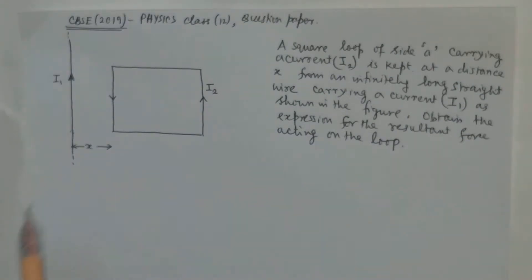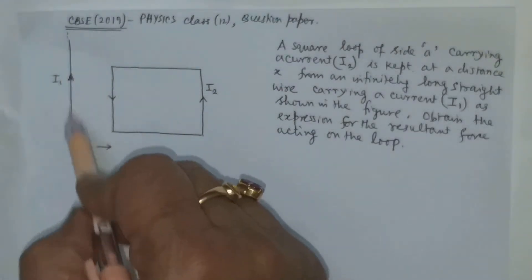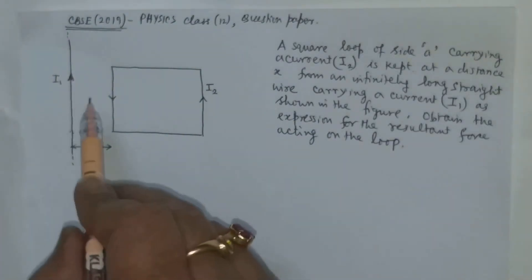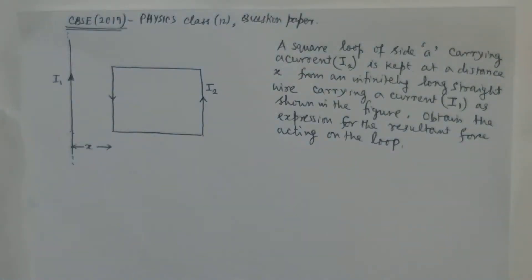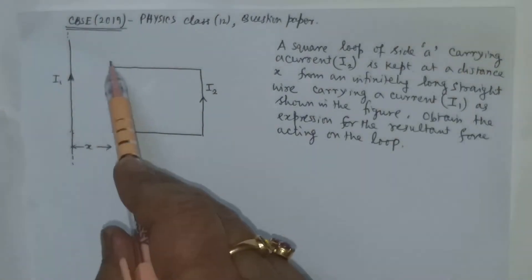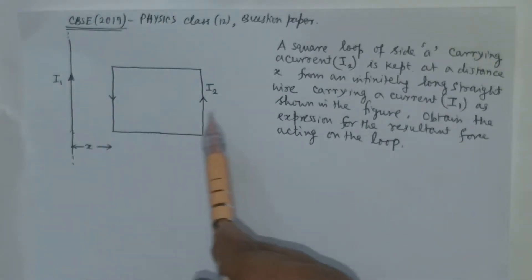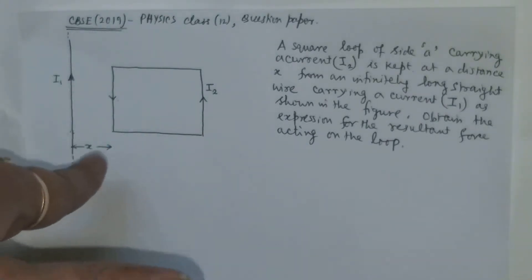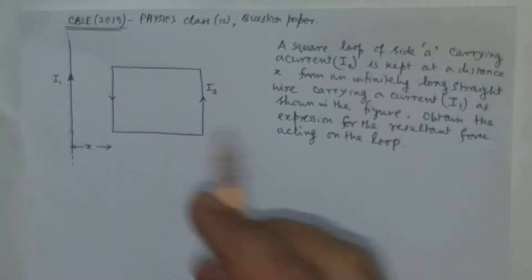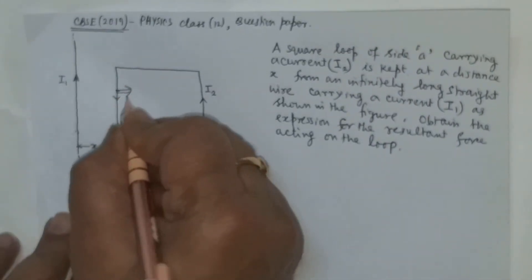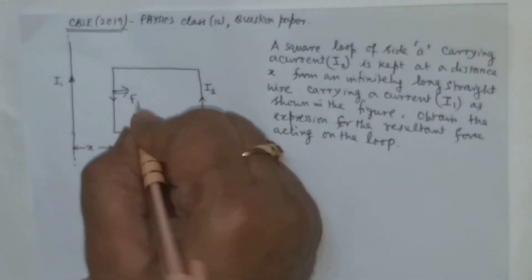You can verify with your right hand thumb rule that this current carrying wire will produce a magnetic field which is in the cross direction. And again, if you apply Fleming's left hand rule, here the magnetic field and the current here, the force will be in this direction. So force here acts in this direction. Let us say this is F1.